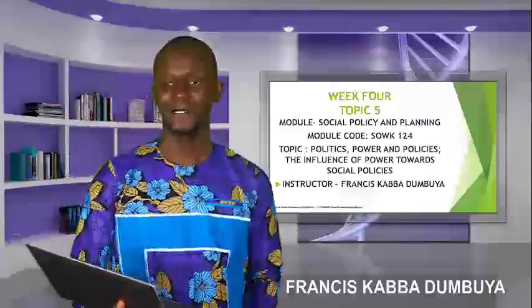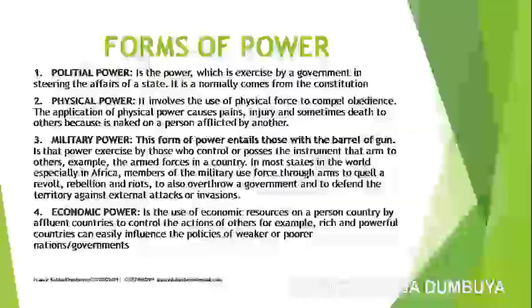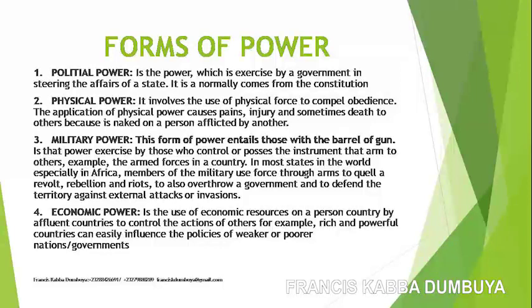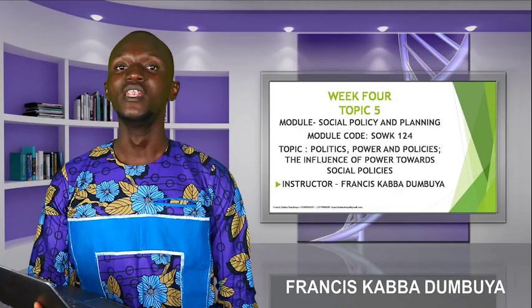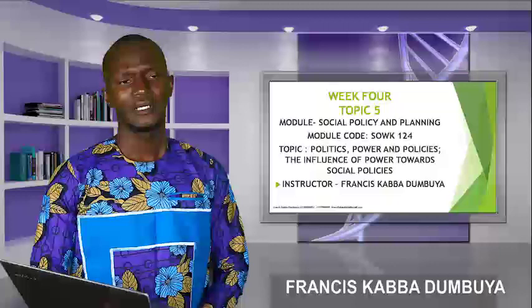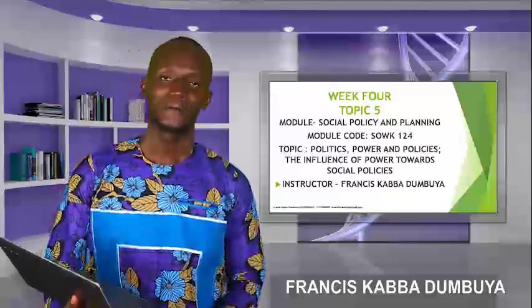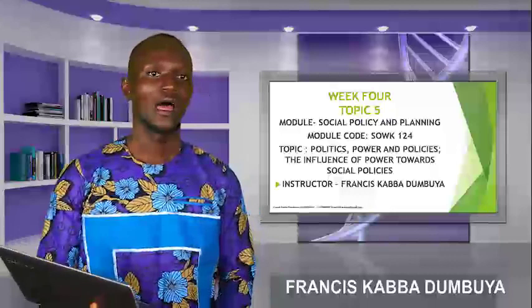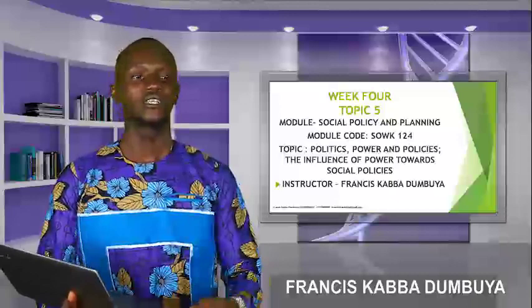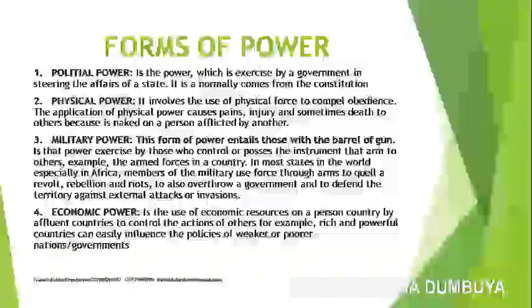Number three, we have military power. This form of power entails those with guns — it is exercised by those who control or possess instruments that can harm others. These are the ones in khaki uniform: military men, soldiers. Mostly in Africa, one current phenomenon is military takeover and intervention. Military individuals think they are competent to take upon the affairs of the state, so they tend to interrupt a democratically elected government to take leadership of the state, which is not correct.